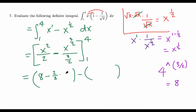Now replacing x with 1: 1 squared over 2 is 1/2. Minus (2/3) times 1 raised to 3/2. Since 1 raised to any positive power is 1, the lower limit gives 1/2 minus 2/3.